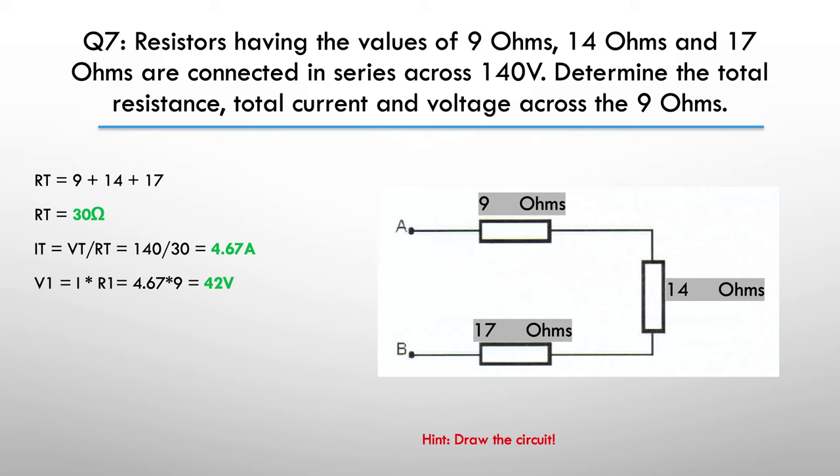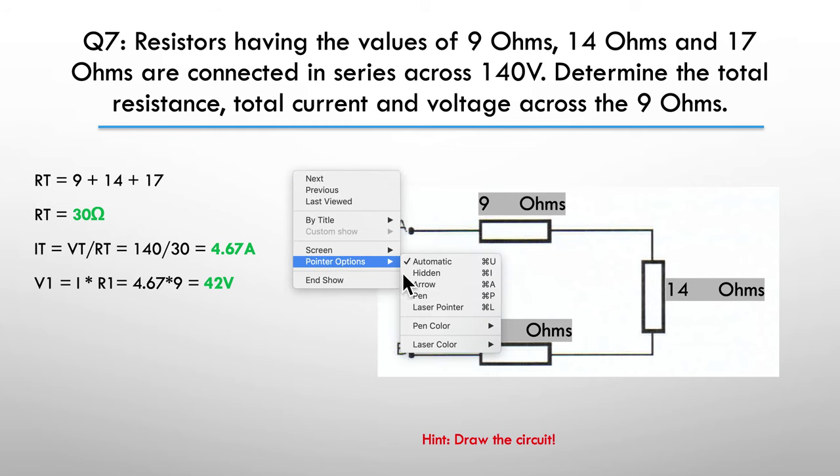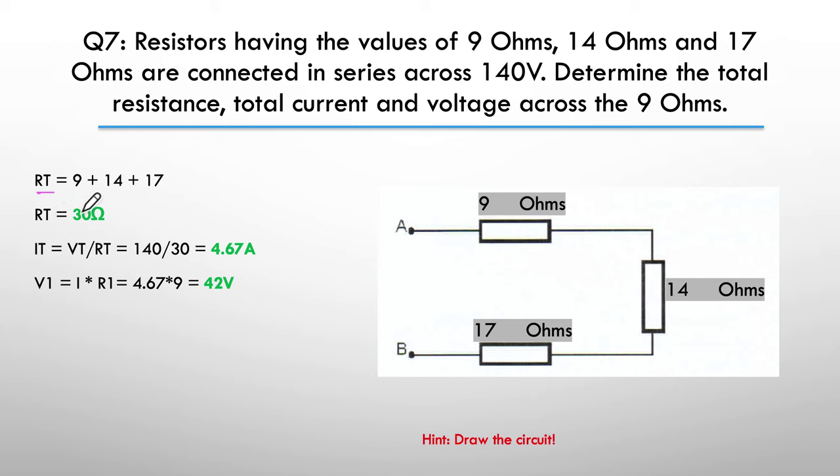So here I've drawn the circuit, three series resistors, 9 ohms, 14 and 17. We had to work out the total, which we've done here. We just add the three resistors together, giving us 40 ohms. The current, the I total, is the voltage total divided by the resistance total. They gave us the voltage total in the question. So 140 divided by our 30, which we got from there, gives us 4.67 amps flowing in the circuit. And we wanted to know what the voltage was across R1, across the 9 ohms. And I simply went with the current multiplied by the resistance value, and that came out at 42 volts.